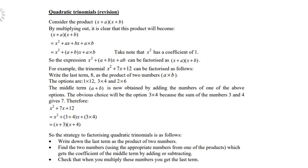For example, the trinomial x² + 7x + 12 can be factorized as follows. Write the last term 8 as the product of two numbers. The options are 1 times 12, 3 times 4, 2 times 6.